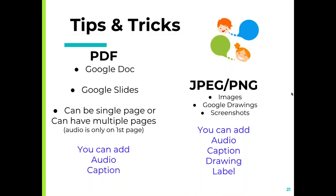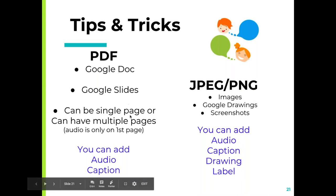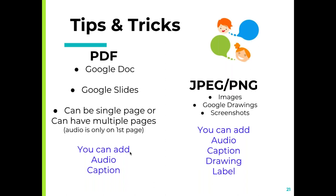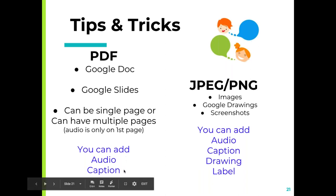Another tip: don't forget that if you have a PDF document, you cannot write on it — it must be a JPEG or PNG. With a JPEG you can add audio, caption, drawing, and label. If you have a PDF and download it as a PDF, you can only add audio or a caption. A lot of PDFs you can convert to a JPEG, which opens up many more options for your students when they're working.